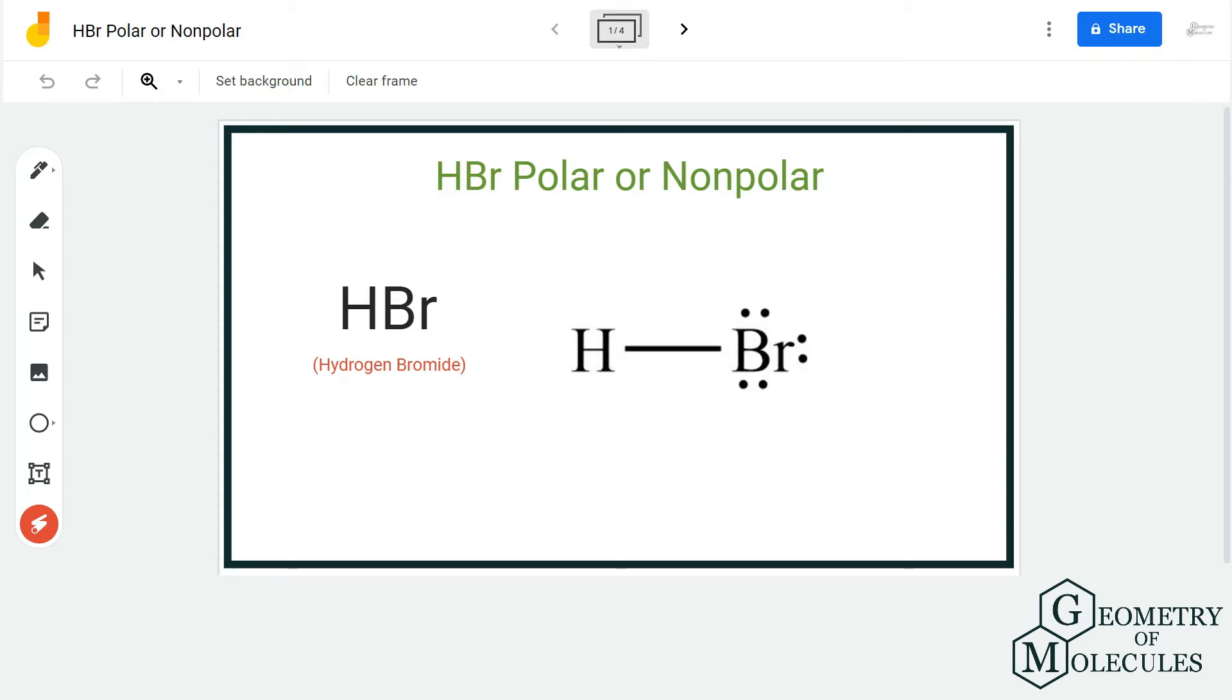We'll examine the difference of electronegativities of these atoms and check if there is a net dipole moment in this molecule. If you look at its Lewis structure, it's quite simple as it is made up of only one hydrogen atom and one bromine atom.